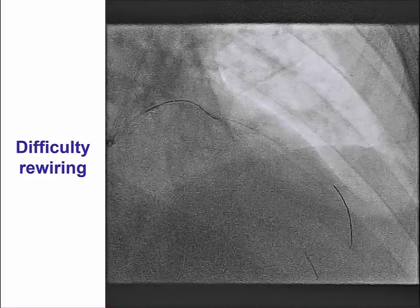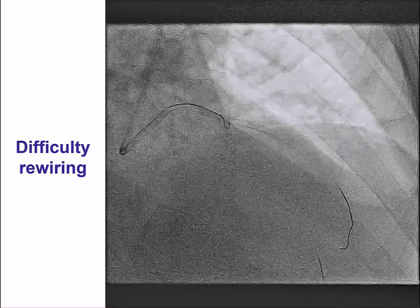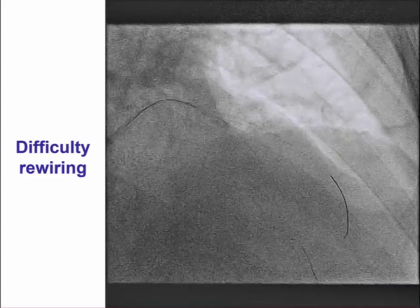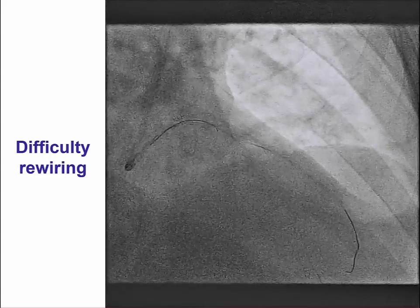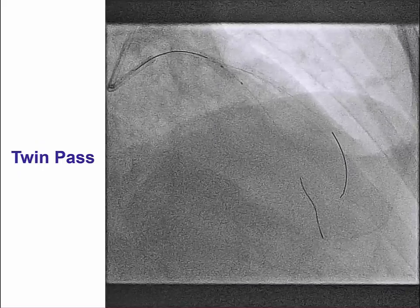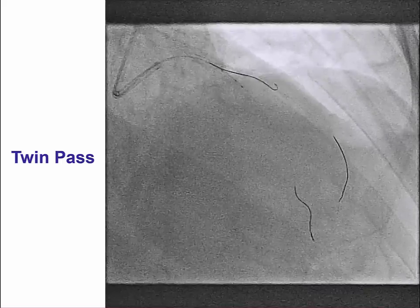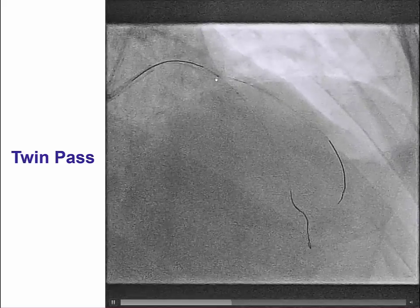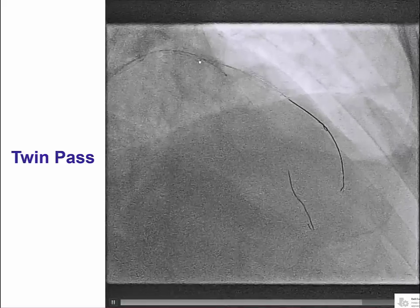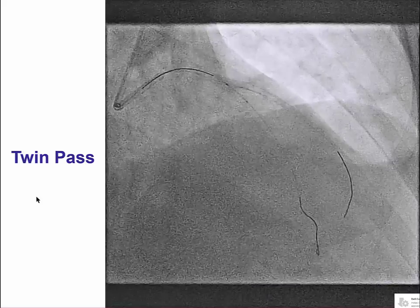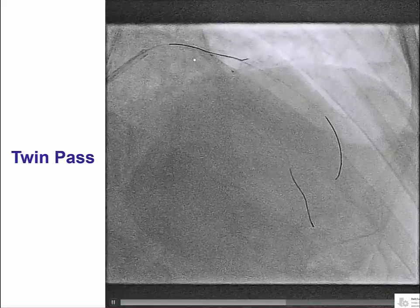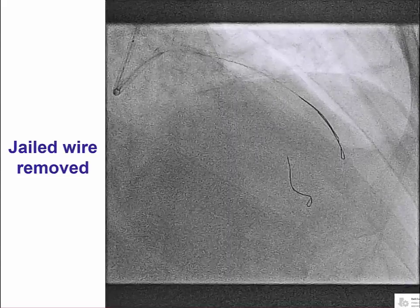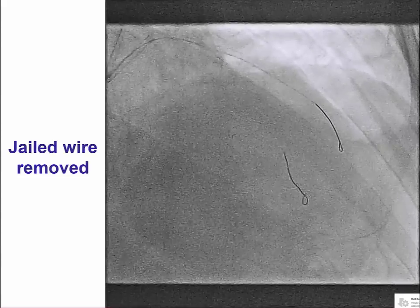What can sometimes be challenging after deployment of the main vessel stent is rewiring of the side branch. We actually did have some difficulty advancing a wire into the diagonal after LAD stent deployment. To overcome this, we used a TwinPass dual-lumen microcatheter. These microcatheters have an exit port proximal to the proximal marker, and by doing that it was easy to advance a workhorse guide wire into the diagonal branch. We then removed the jailed guide wire, which came back easily.